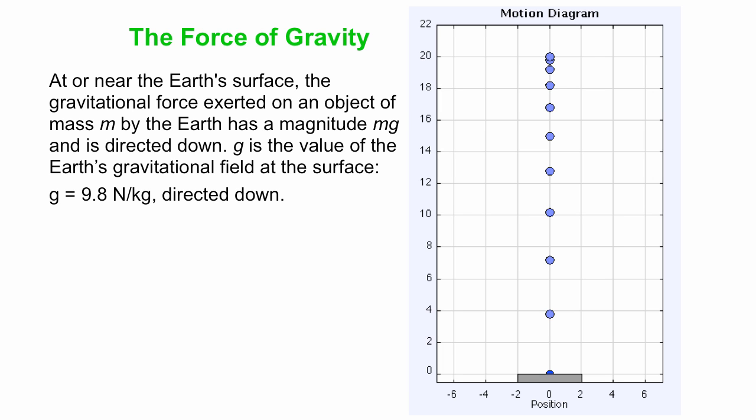So g is 9.8 newtons per kilogram directed down. You might have seen that as 9.8 meters per second squared. That's an equivalent unit, but it's nice to think of it as newtons per kilogram. Every kilogram of mass of an object experiences 9.8 newtons of force because of its interaction with the earth.